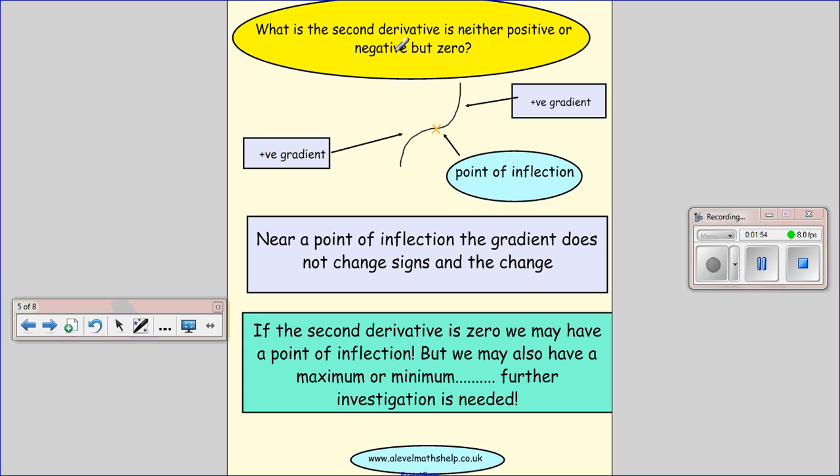Now, if we have a second derivative which is neither positive or negative, but is zero, it could be that we have a point of inflection. But it might also be that we have a maximum or a minimum and further investigation is needed. Luckily, they don't come up so often.